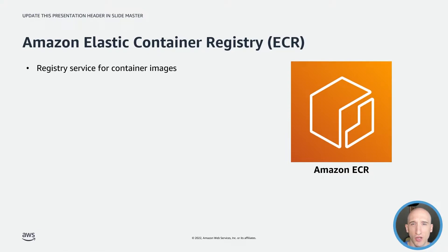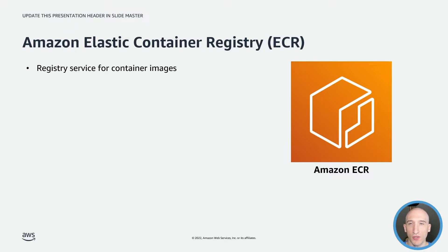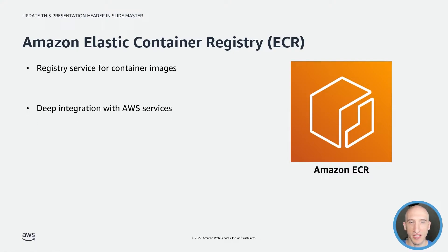ECR comes with cross-region and cross-account replication, which makes it easier to have your images where you need them. ECR also comes with pull-through caching rules that provide a mechanism to cache repositories that may live in remote public registries, like Docker Hub for instance. This ensures you have the latest version of that image as close to your ECR instance as possible, which greatly reduces latency when pulling down those images to build your containers. The largest benefit to using ECR is its deep integration with other ECS services, such as Elastic Container Service and Elastic Kubernetes Service, having all your container-related workloads in one centralized management experience within the AWS console.